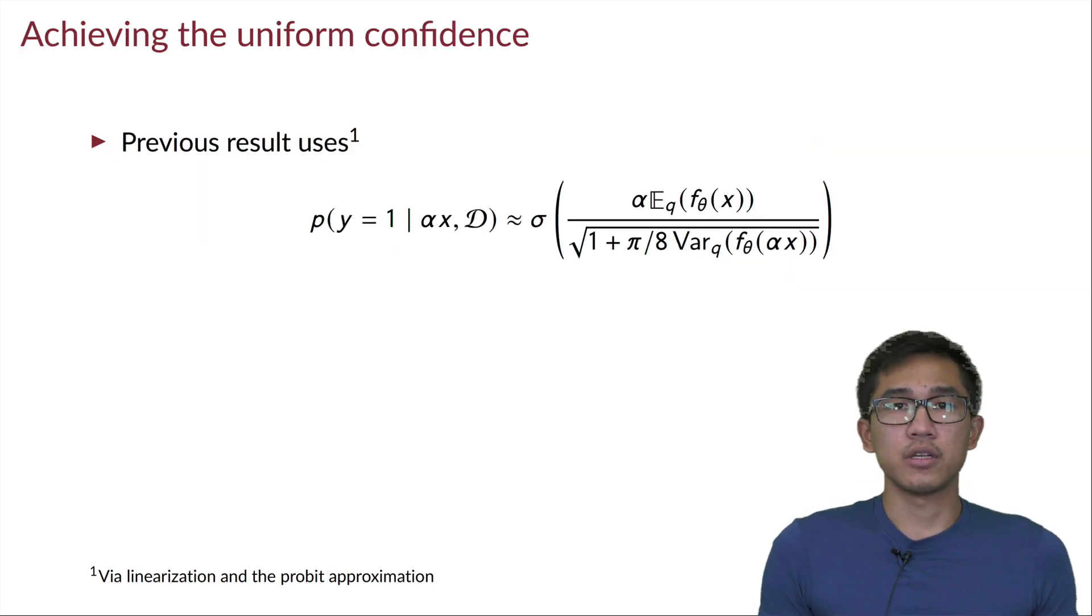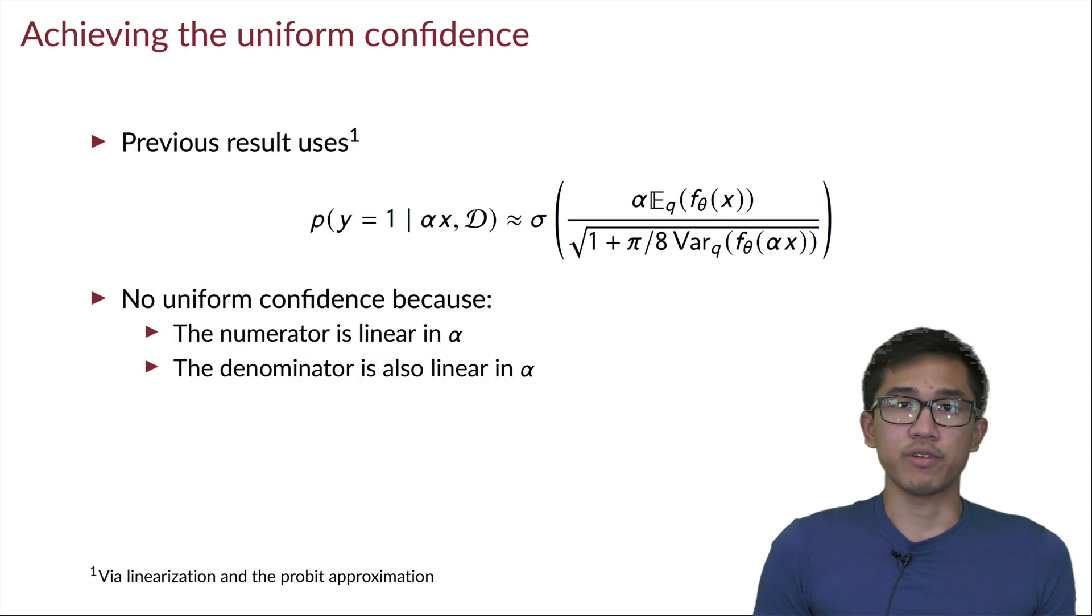And speaking about the uniform confidence, how can we obtain this in this particular binary setting? Well, if we use the linearization and also Laplace approximation, we can write down the predictive distribution in the following simple form.